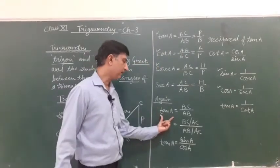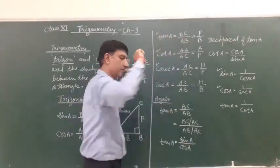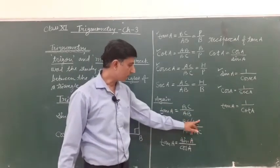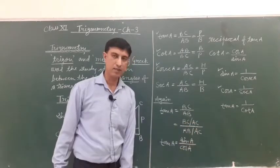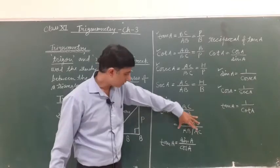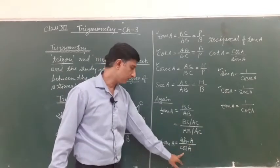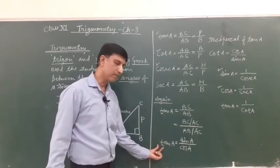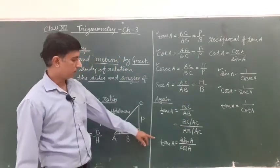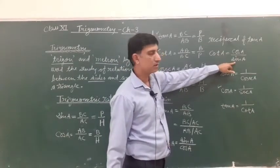Again tan A it is equal to BC upon AB. If we divide BC and AB by AC, BC upon AC whole divided by AB upon AC, then BC upon AC is trigonometric ratio of sin A and AB upon AC is trigonometric ratio of cos A. So tan A we can write sin A upon cos A, and reciprocal of tan A is cot A. So we can write cos A upon sin A.